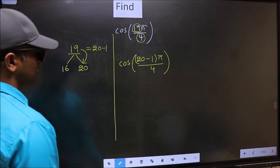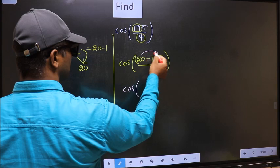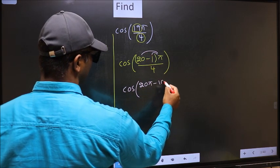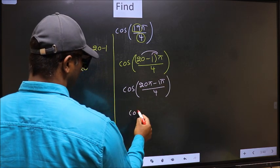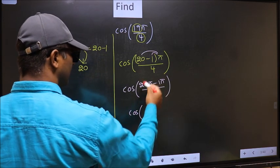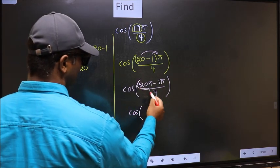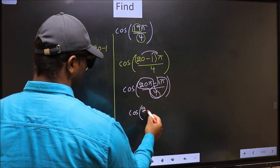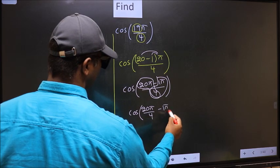Next, cos. Now you should open up the brackets. You get 20π minus 1π by 4. Now cos, here you should split the denominator in this way, that is 20π/4 minus 1π/4.